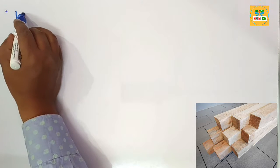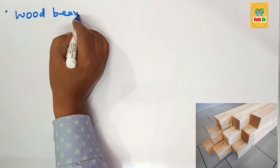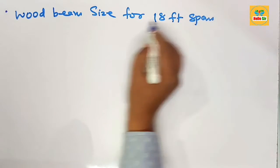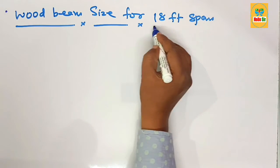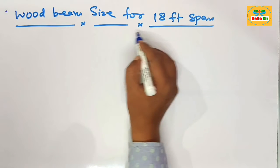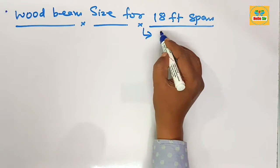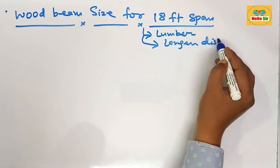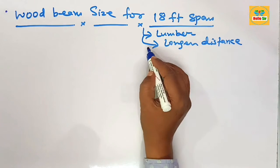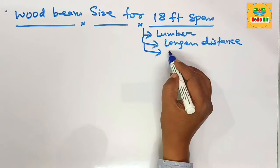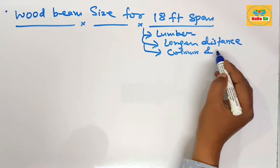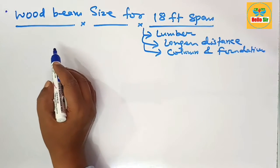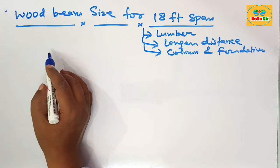In this video we will find out the correct wood beam size required to span 18 feet. A wood beam is a composite piece of lumber used to span longer distances, and it can support live load, dead load, and seismic load of the structure, transferring forces to columns and finally down to the foundation. Wood beam size depends on many factors, but here we calculate according to the thumb rule.